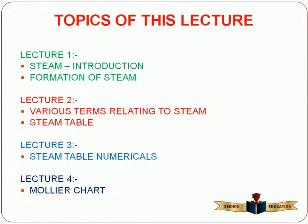In the previous three lectures, we already studied about the different topics. In the first topic, we studied what is steam and how we can generate steam — that is the formation curve of steam. In the second lecture, we studied about the various terms relating to steam, such as superheated cooling, subcooling, latent heat, sensible heat, and dryness fraction. And in the third lecture, that is all about the steam table numericals based upon the Rankine cycle. All these three lectures are available in English version as well as in Hindi version.